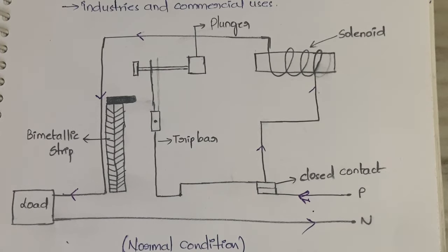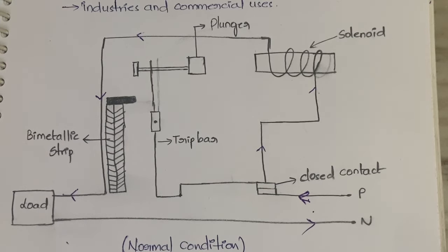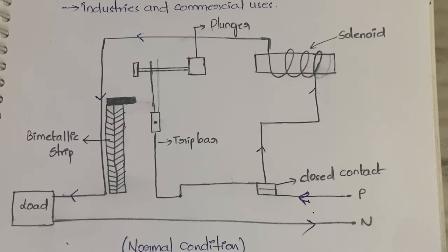In case of an abnormal situation — when there is current overload or a short circuit — we have two categories. The first is when the current is increasing gradually, step by step, for example: one ampere overload, then two amperes, then three amperes. The second is when the current has suddenly increased.